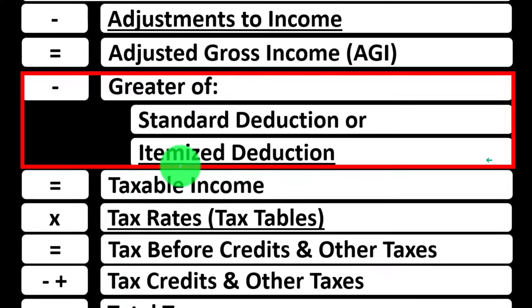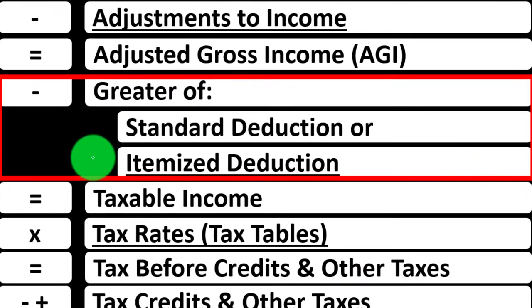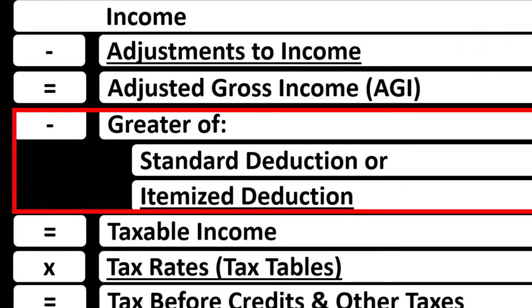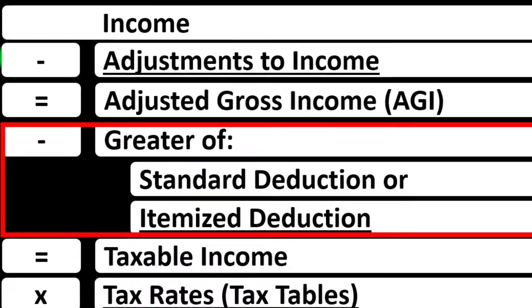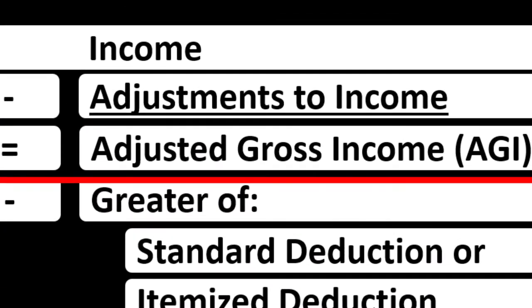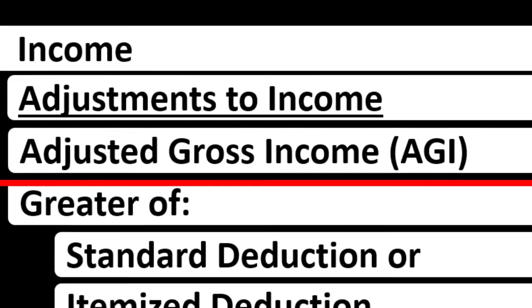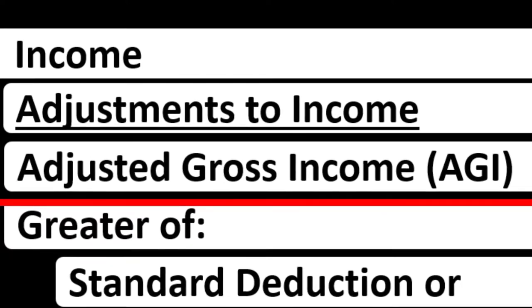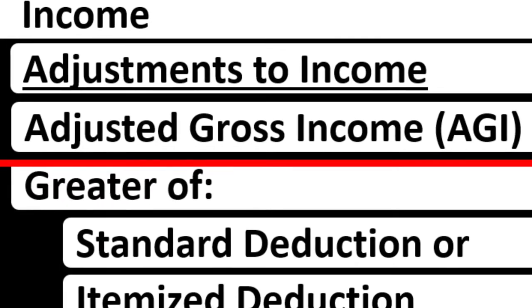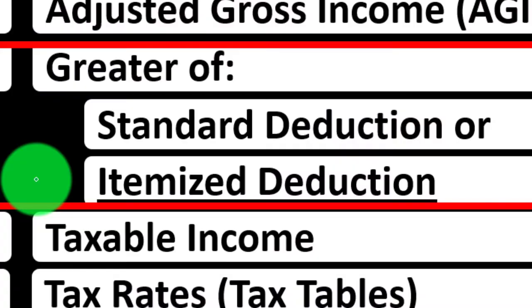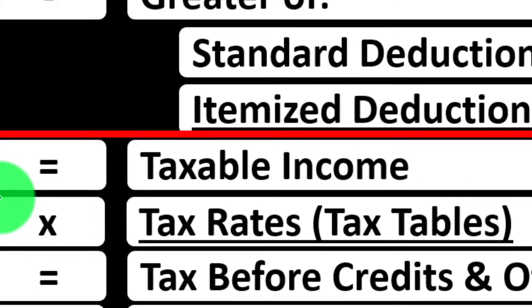Here's our income tax formula focused in on the itemized deduction. In prior presentations, we looked at the income line. We looked at the adjustments to income, which could also be called the above-the-line deductions, deductions for adjusted gross income, or Schedule I deductions. Then we have the adjusted gross income subtotal, and then our deductions down below — taking the greater of the standard deduction or itemized deduction — meaning we always have to compare and contrast those two to get down to the taxable income.